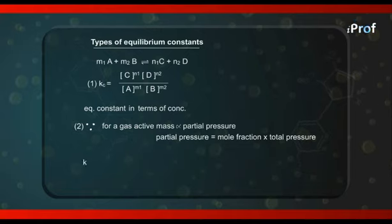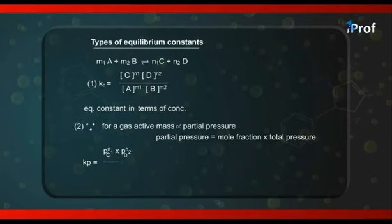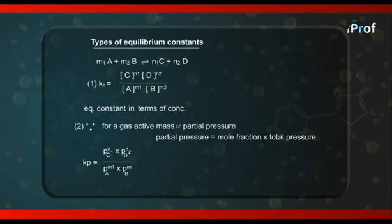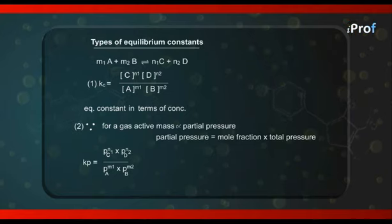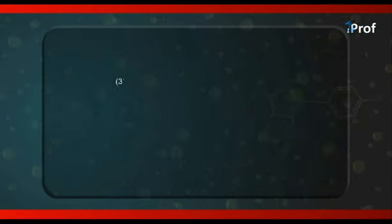For this reaction, Kp = (Pc)^n1 × (Pd)^n2 / (Pa)^m1 × (Pb)^m2. Whenever we are given data in the form of partial pressures, it becomes convenient to deal with Kp, and if given concentrations or active masses, it is convenient to deal with Kc.